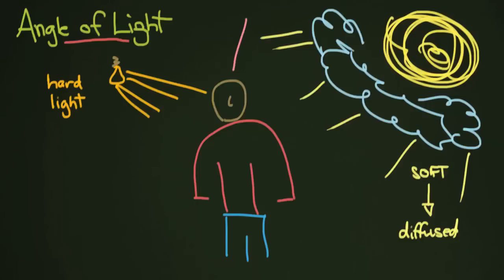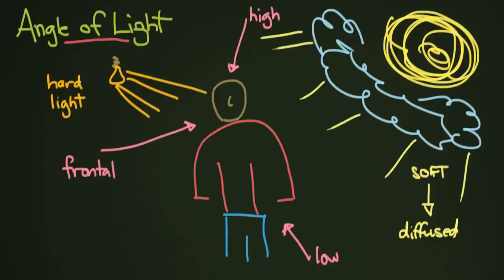We're going to choose pink. So you can have light that comes from above — high angle. You can have light that comes from below — low angle. You can have light that comes from the front, and that's called frontal light. Frontal would be more from directly in front of the subject. You can have side lighting, which would actually be coming in from the left or the right.